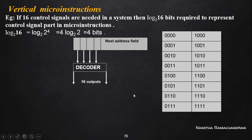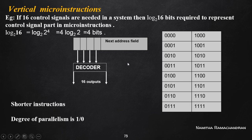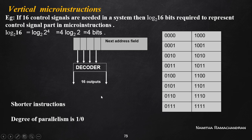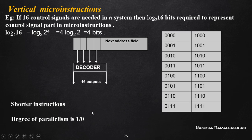We can conclude that vertical micro instructions are shorter instructions. However, we need additional external hardware — a decoder — to generate the corresponding control signal. We cannot directly identify which control signal to activate; only the decoder output can decide after decoding. This takes some more time to generate the control signal. The degree of parallelism is 1 or 0 — meaning we can activate a maximum of one control signal at a time.